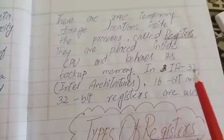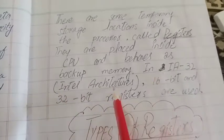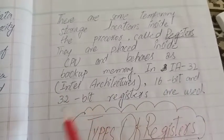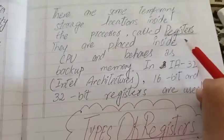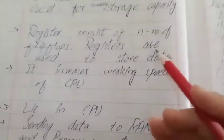In IA32 Intel architecture, 16-bit and 32-bit registers are used. We are talking about Registers. Registers simply have to store data when we use CPU.